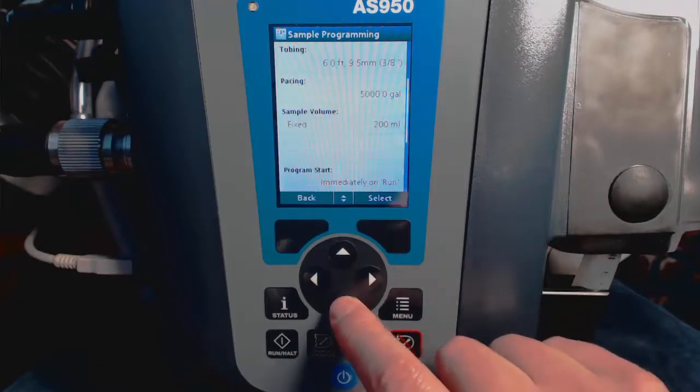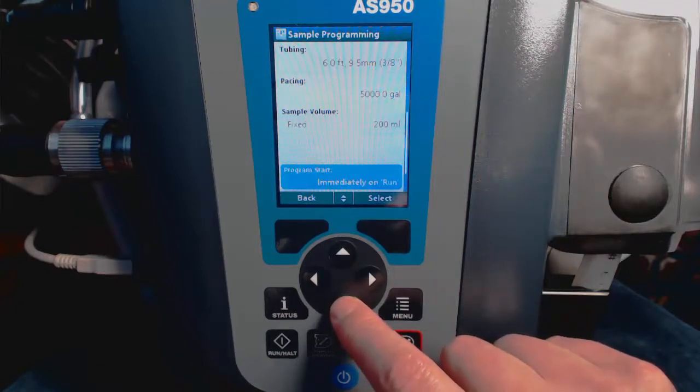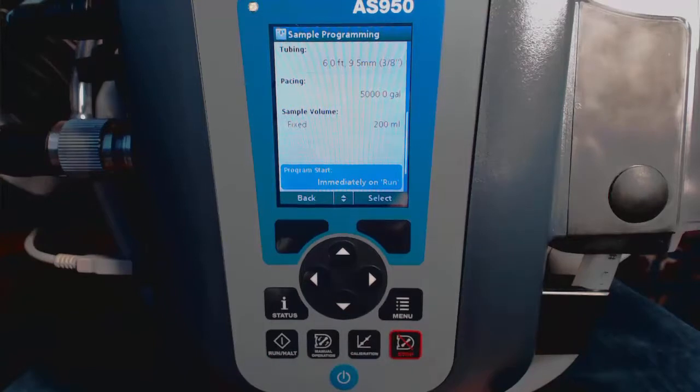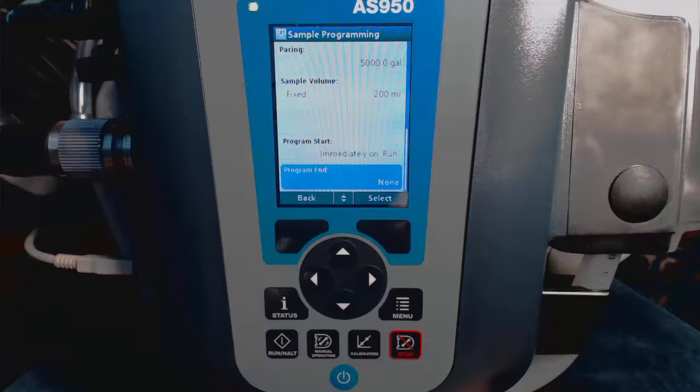Now we have program start. It's currently at immediately on run, and that's what I'd prefer, so we'll leave that there as well. And finally, program end. In this case, it says none, and that will have the program run continuously.